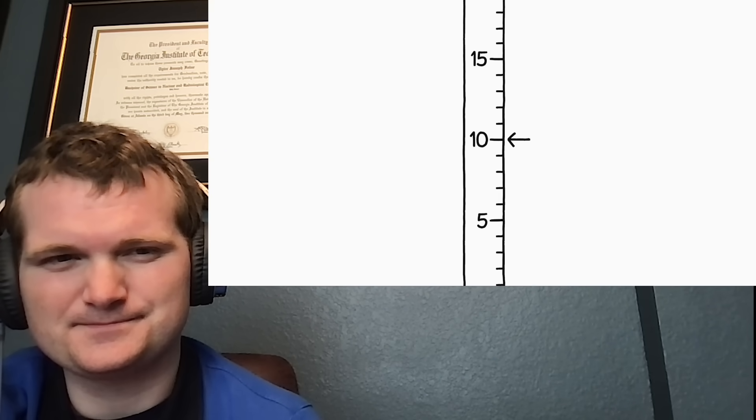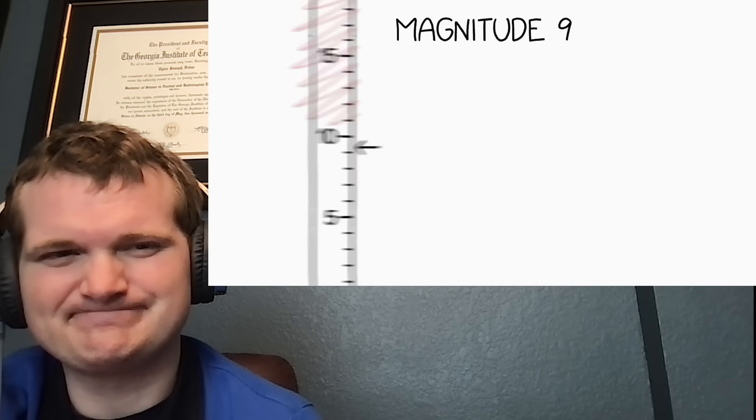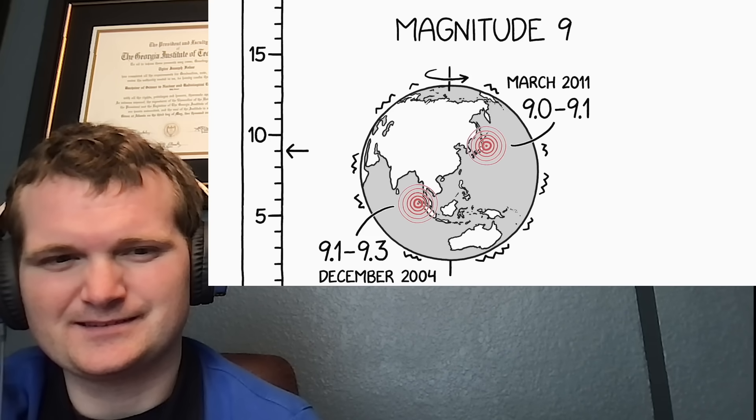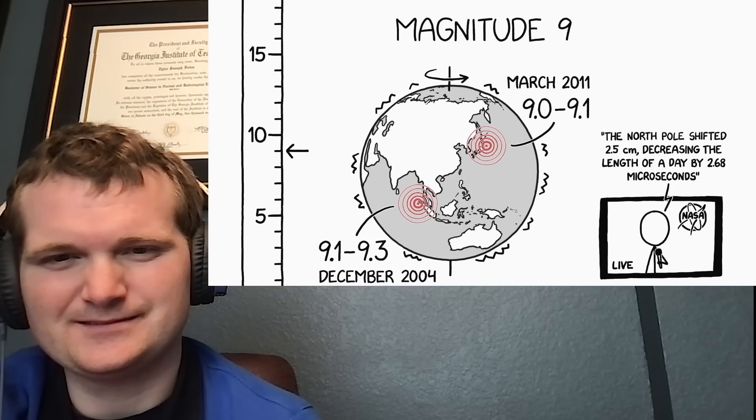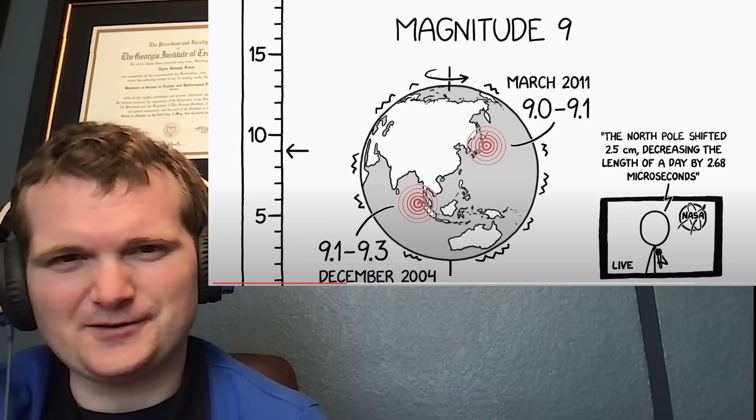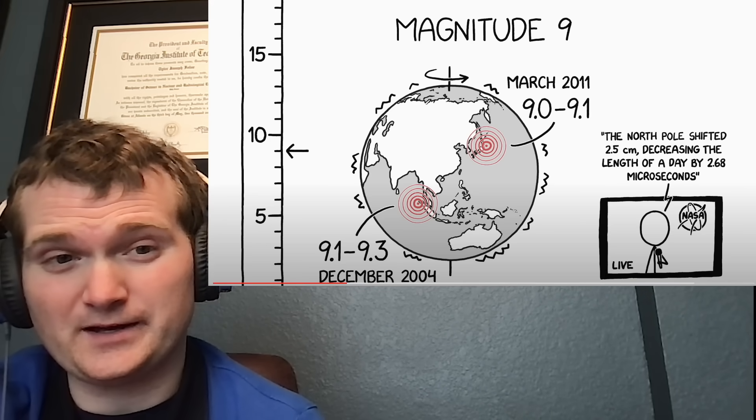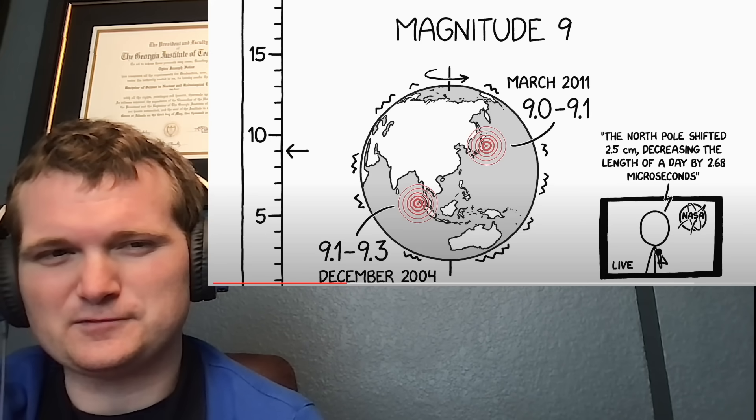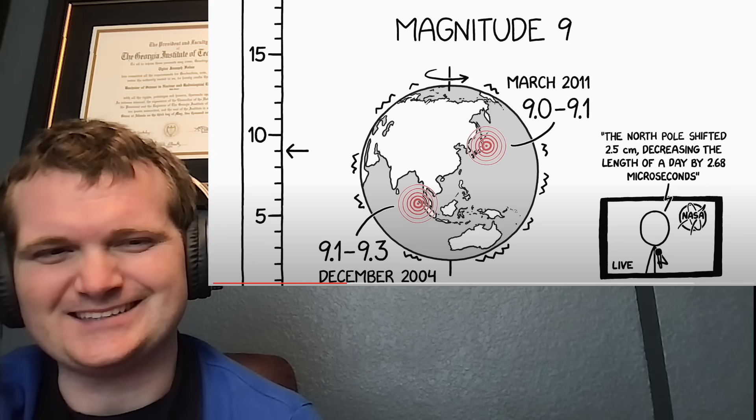But even if 10 isn't the top of the scale, it might as well be. A magnitude 9 earthquake already measurably alters the rotation of the Earth. The two magnitude 9 plus earthquakes this century both altered the length of the day by a tiny but measurable fraction of a second. And there we go, the March 2011 one, the earthquake and tsunami that made everyone aware of what Fukushima even is.